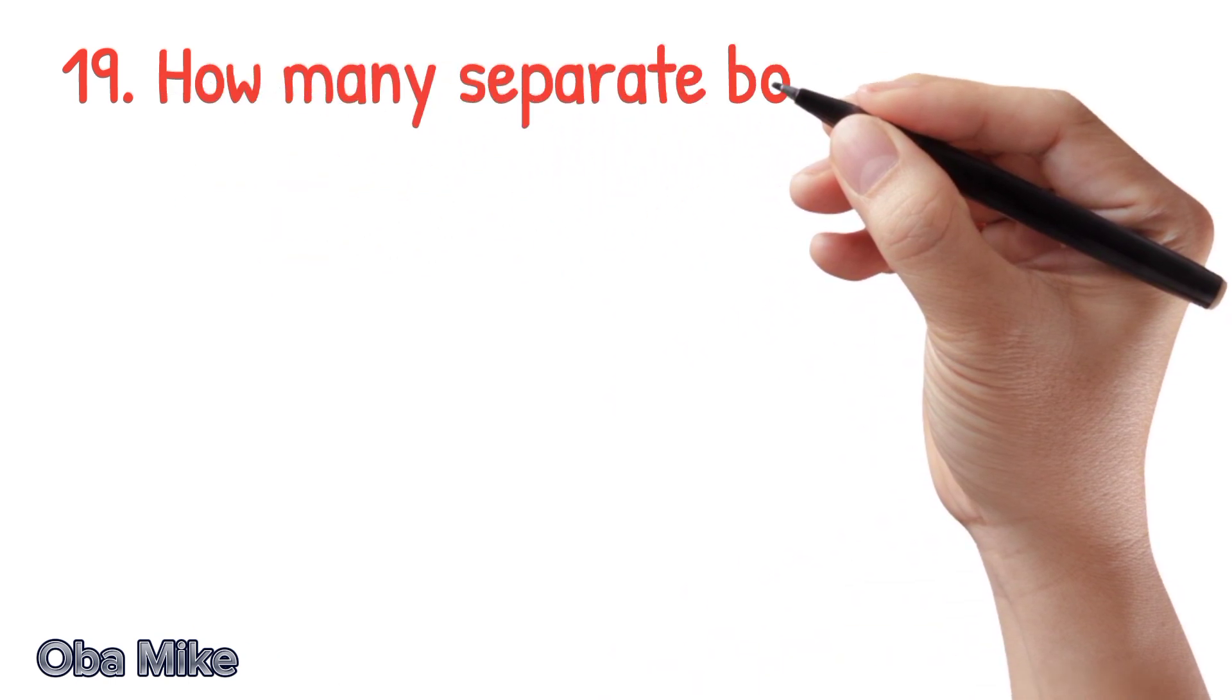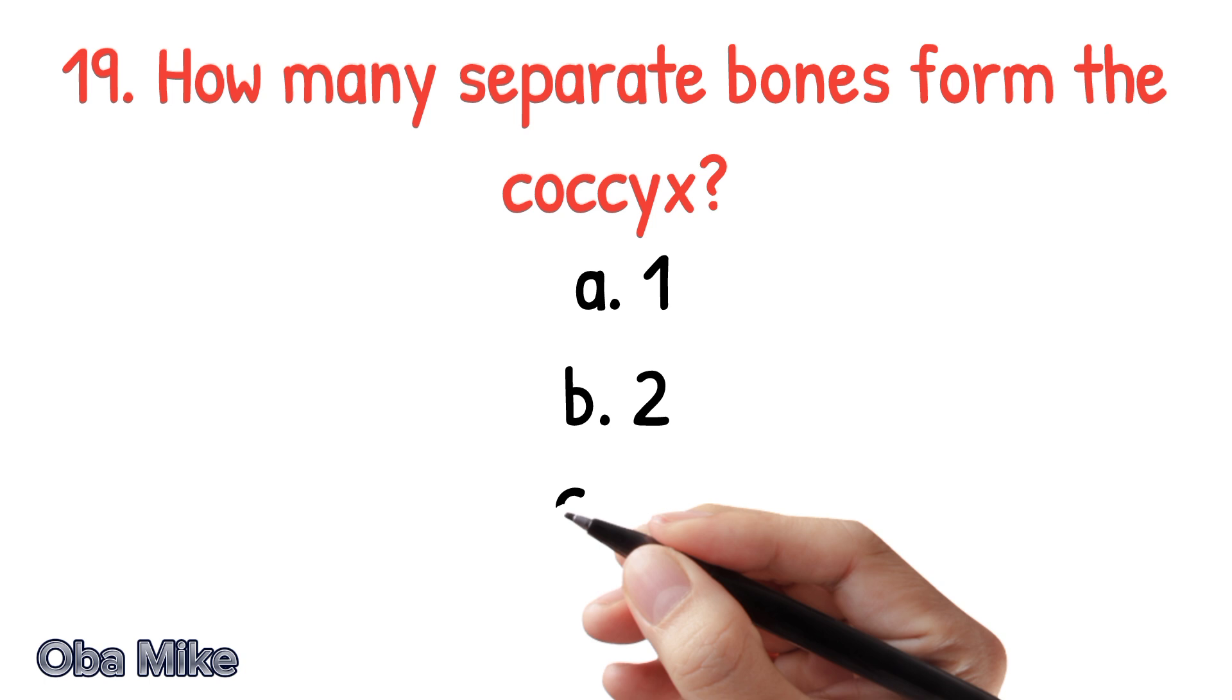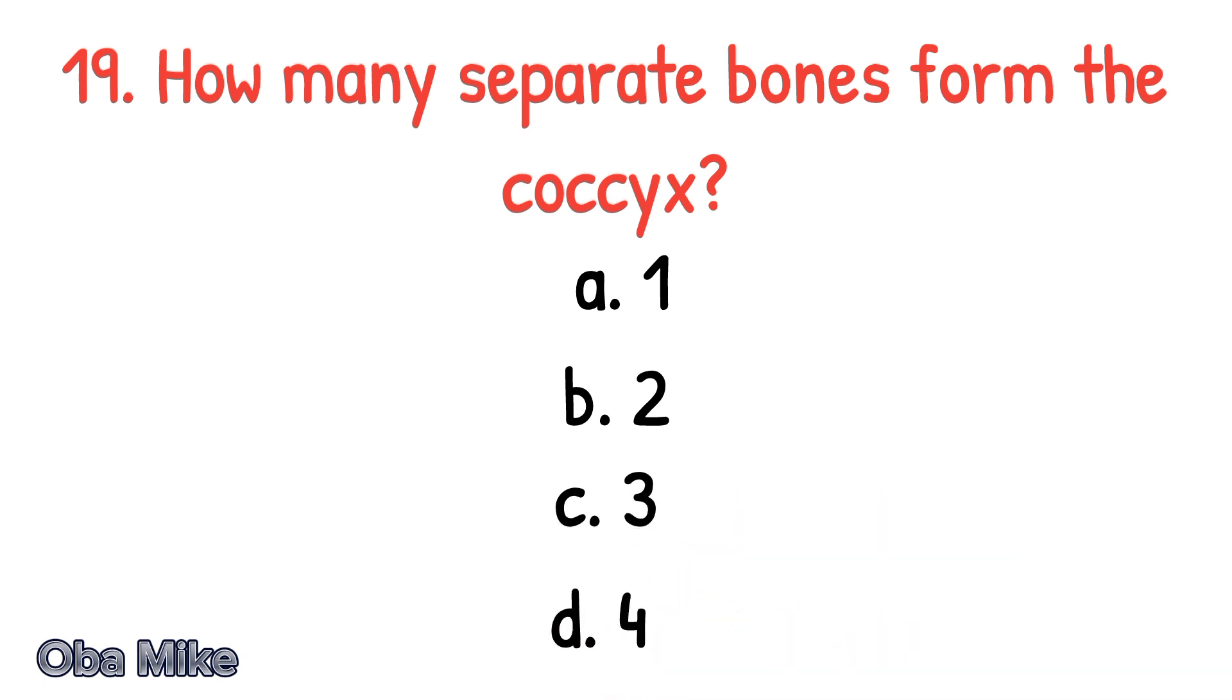Number 19. How many separate bones form the coccyx? A. 1, B. 2, C. 3, D. 4. The correct answer is D. 4.